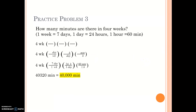Practice problem 3: How many minutes are there in 4 weeks? This time we have 3 sets of conversion factors, so we need 3 sets of parentheses. I start with the value of 4 weeks. The problem is asking for minutes, so minutes are at the top of the last parentheses. Since I was given weeks, in the first parentheses I place weeks at the bottom so it cancels out. The conversion factor containing weeks is 1 week equals 7 days, so 7 days goes on top of the first parentheses.